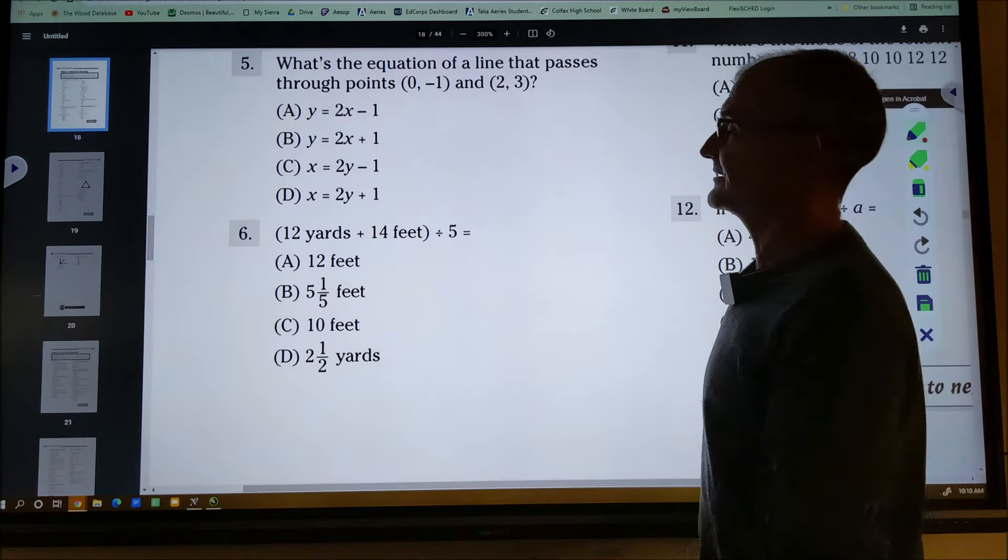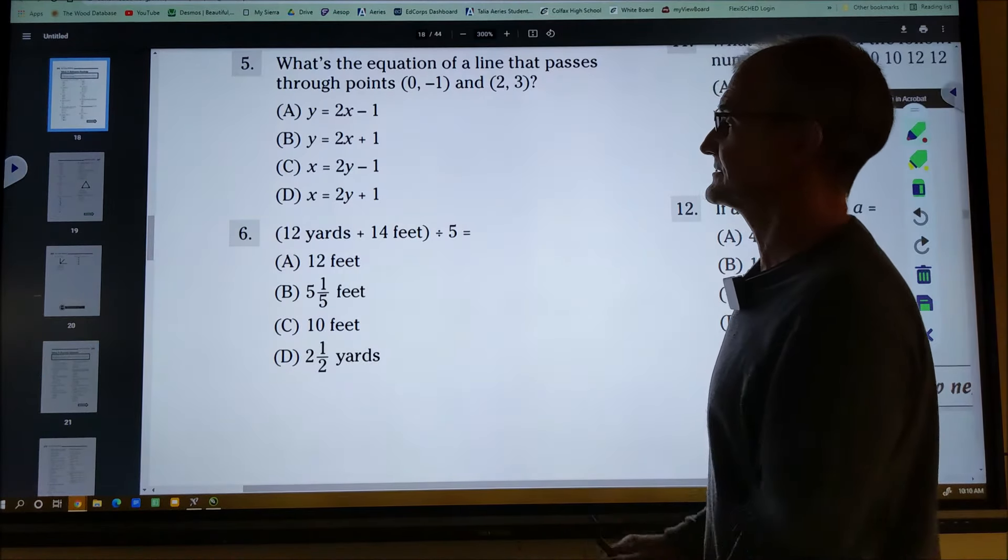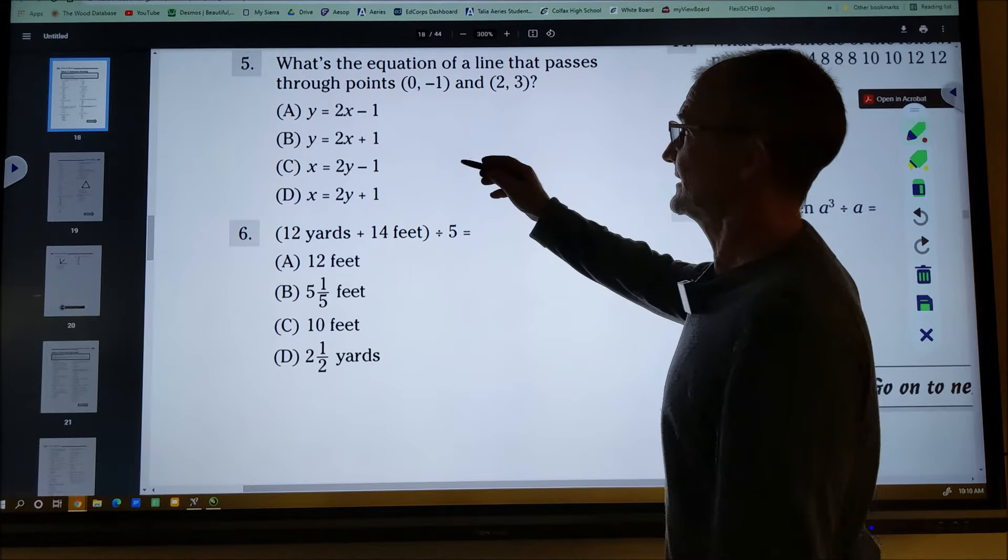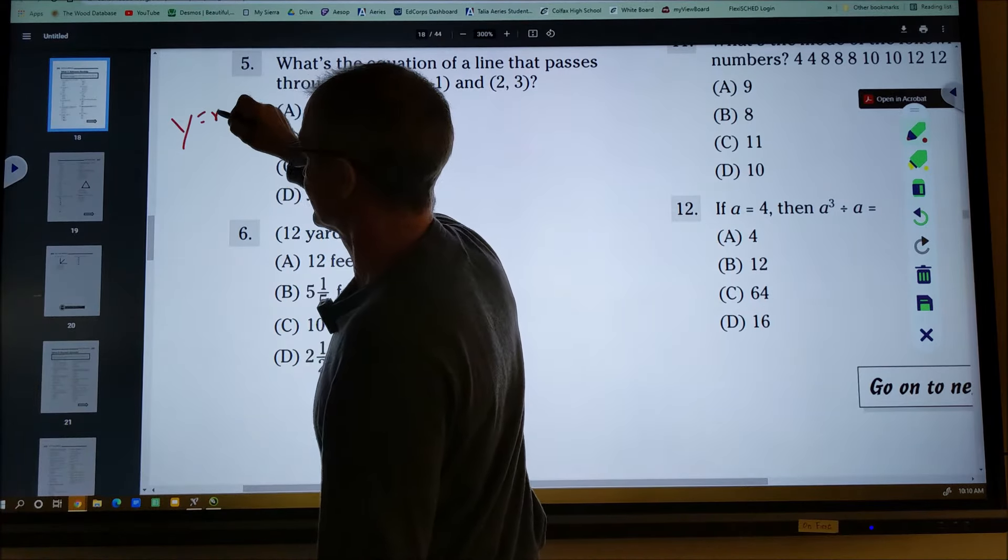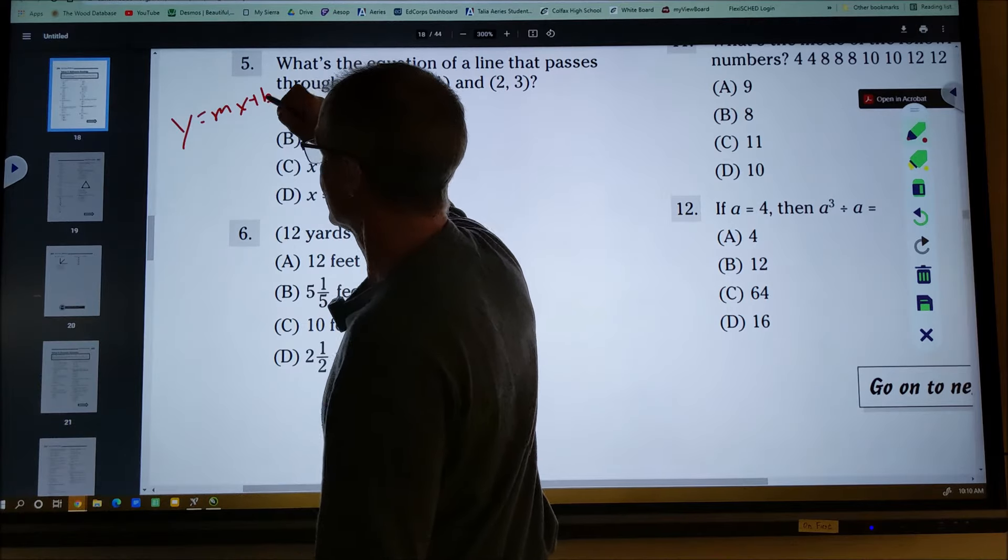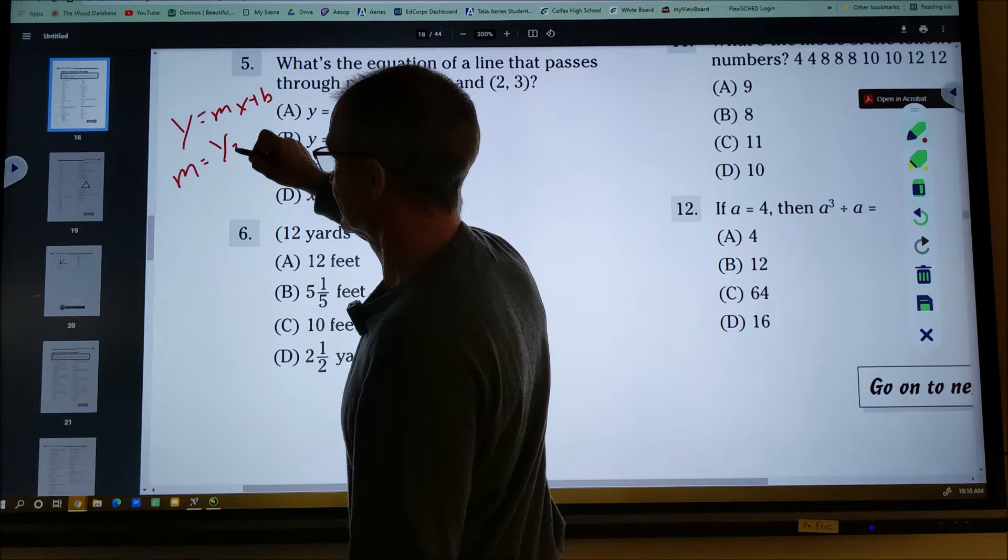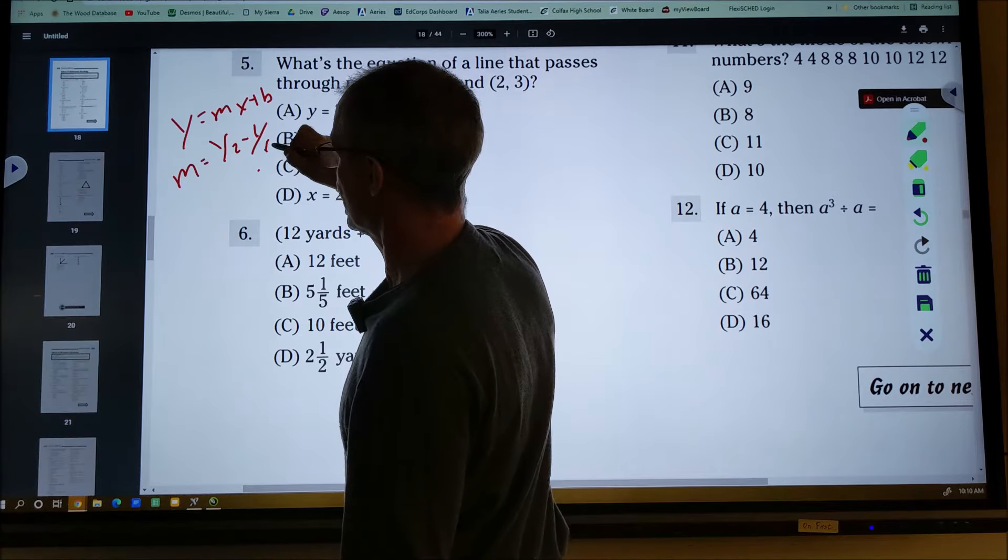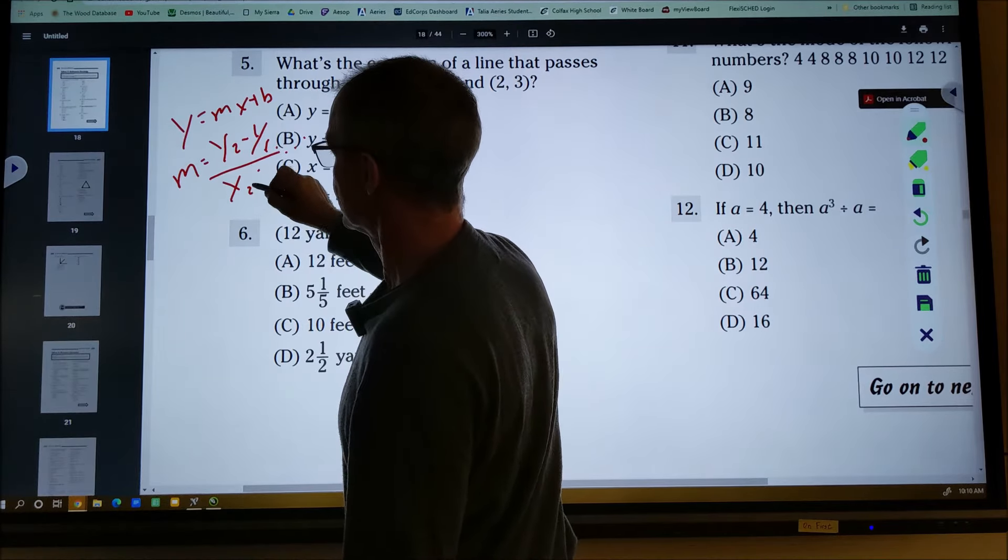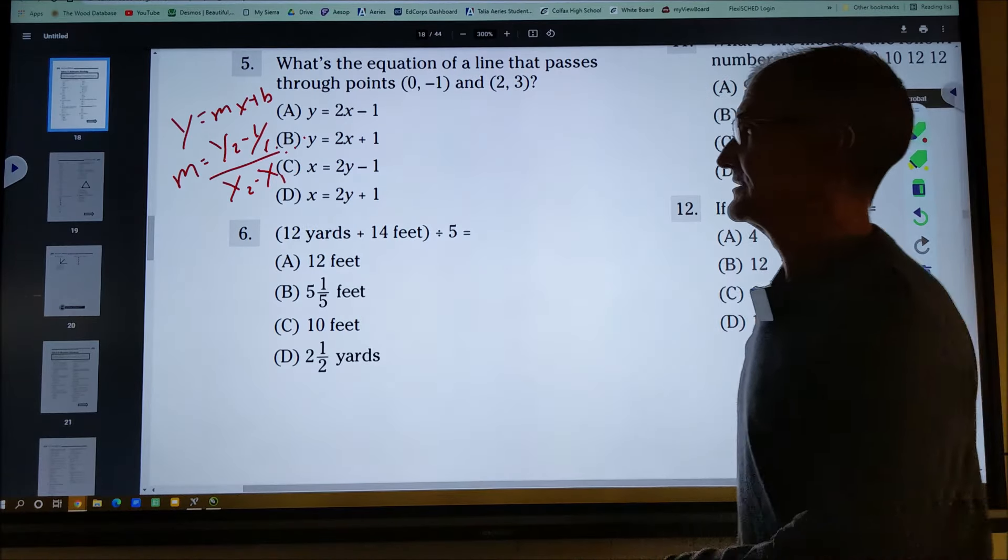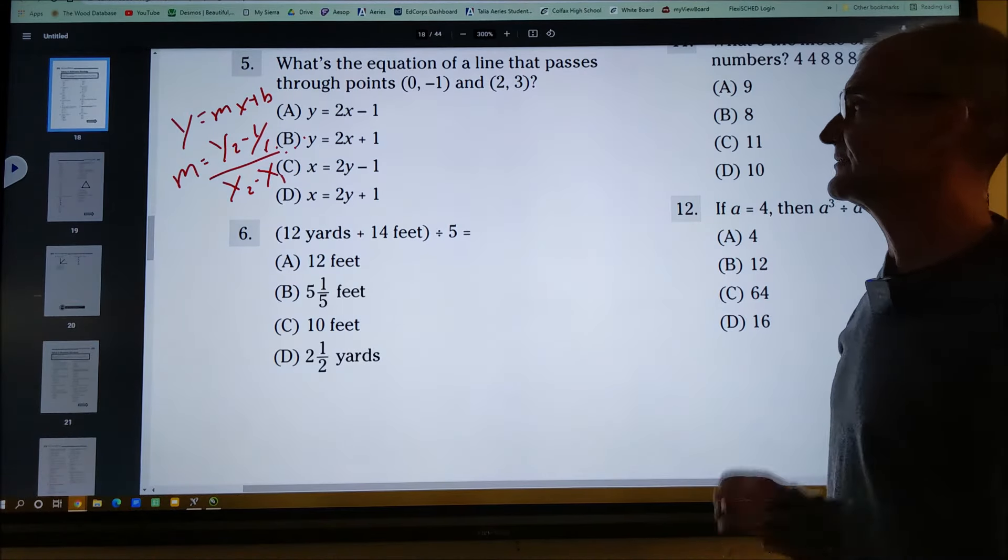Number five here, I don't think there are any tips or tricks to this. You just need to know this in math. The general equation is y equals mx plus b, where m is the slope. m is defined as the rise, which is going to be the difference in the y values, over the run, the difference in the x values. So there's a lot of math knowledge you need to know here.